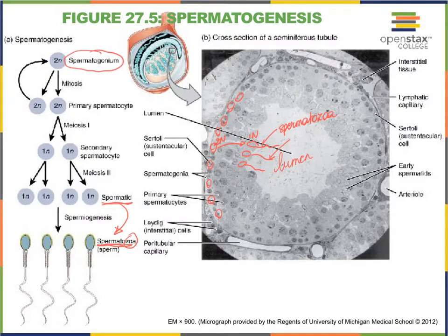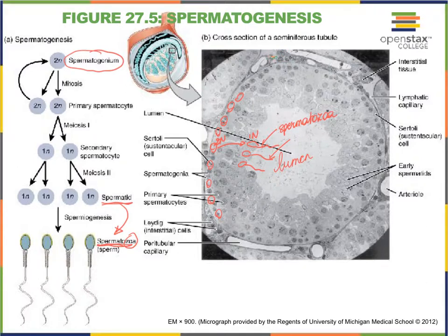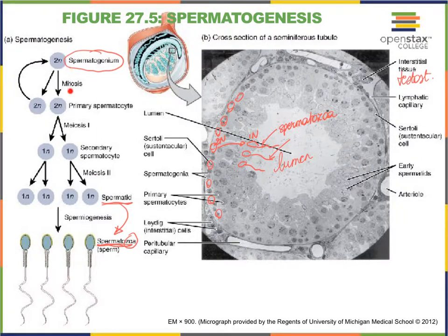We're not quite done with this slide. In addition to our seminiferous tubules, which are responsible for making sperm cells, in between the seminiferous tubules we have our so-called interstitial cells — also called the cells of Leydig — and they produce testosterone. Testosterone is needed to keep the process of spermatogenesis going.